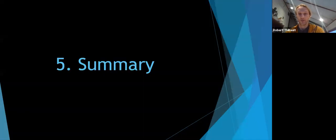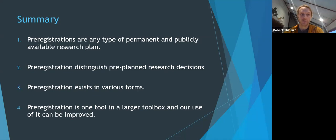so at that point I'll just summarize quickly what we've talked about so first thing is pre-registration or any type of permanent publicly available research plan the one core function that pre-registration will always ensure is done is that it distinguishes pre-planned research decisions pre-registration exists in multiple forms we've talked about clinical trials and psychology here mostly but there's also differences for observational research epidemiology economics and political science etc and finally I find it important to remember that pre-registration is one tool in a larger toolbox and the way we use and implement pre-registration still has much room for improvement